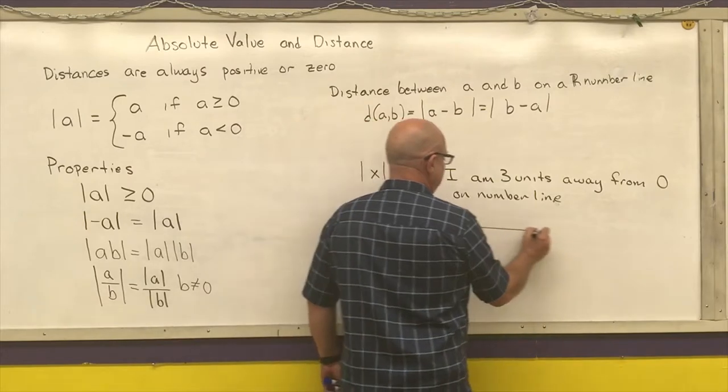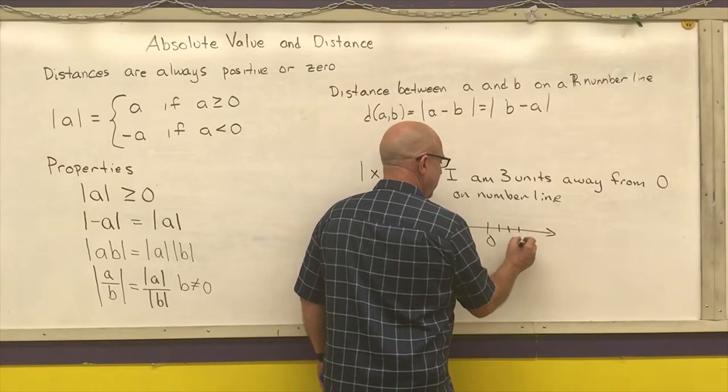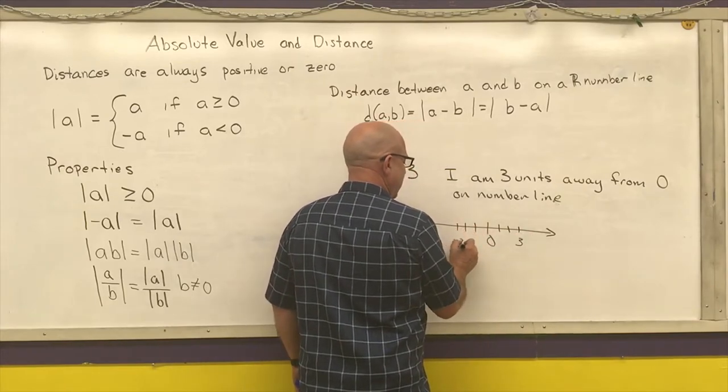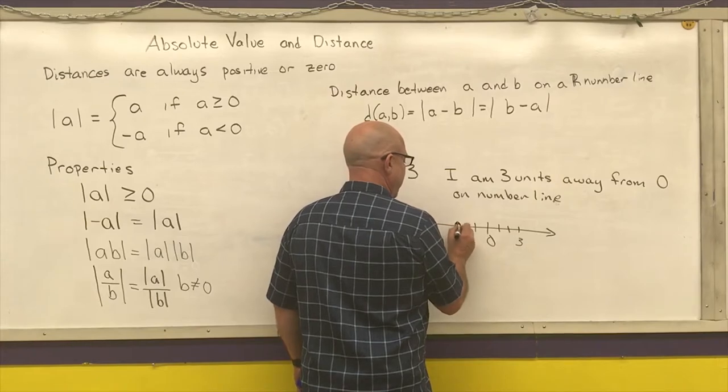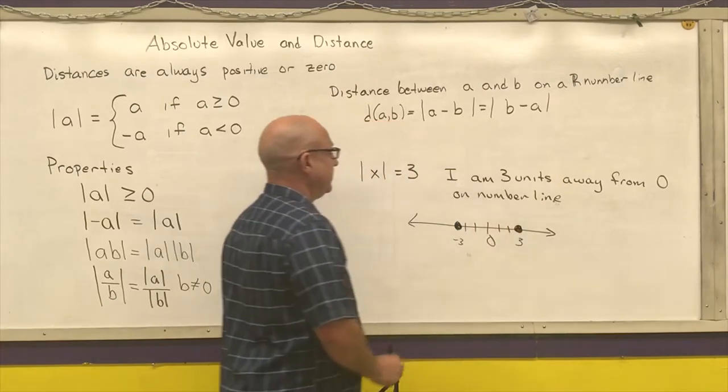If I have my number line: one, two, three, one, two, three. I'm either that number or that number.